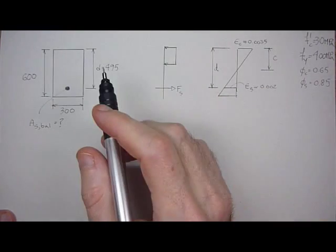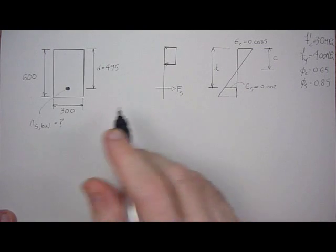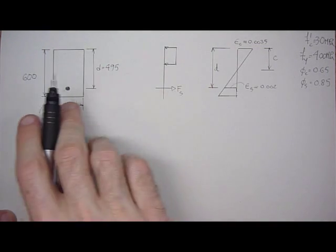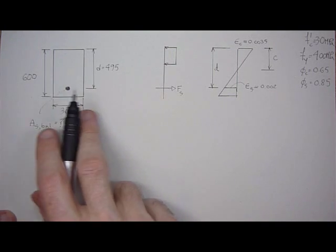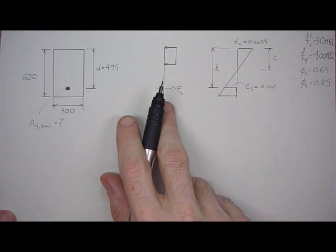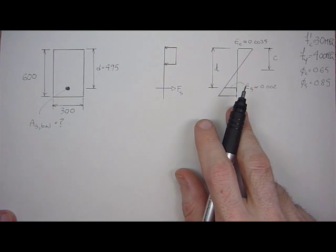First of all, we need to know what the definition is of this term. We've got three diagrams here: the section diagram showing the geometry, the area of steel, the stress diagram, and then a strain diagram here.